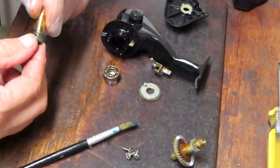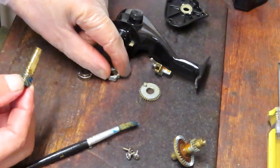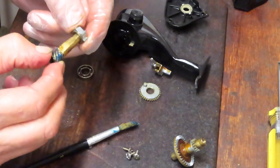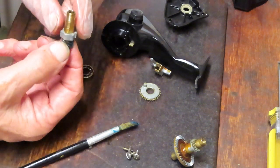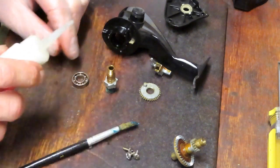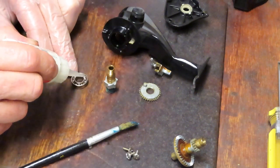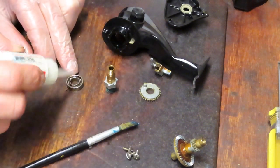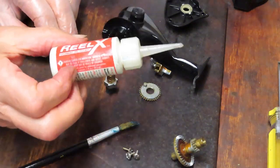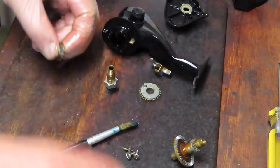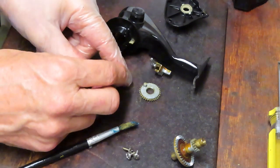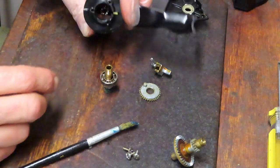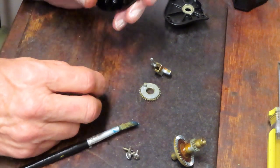Now we're going to install that click ratchet for the anti-reverse gear. That's why I kept the orientation the way I did. Then I'm going to flood the bearing here with some fresh oil. I'm using ReelX which is an aftermarket fishing reel oil.